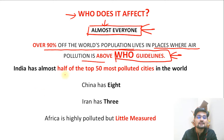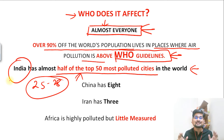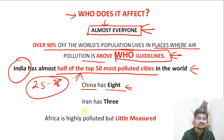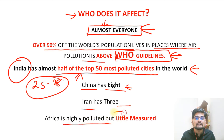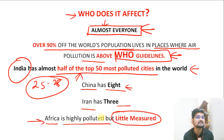That is very worrisome. India has almost half of the top 50 most polluted cities in the world. Almost 25 to 28 cities in the world contributing to more air pollution are in India. China has eight major cities, Iran has three major cities in the southern part of Asia. Africa is highly polluted but little measured, so data is not available for African cities either. In context of India, we are a contributor to most of the world's air pollution. This has to be like a national emergency when you talk about air pollution.